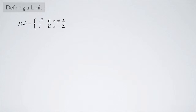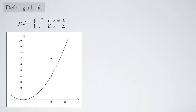Suppose we have a function f that looks like this: x squared if x is not equal to 2, and 7 if x is equal to 2. Here's a graph of that function — it looks like x squared everywhere except at x equals 2, where we have a hole. Normally it would be 4, but instead it's 7, so we have a dot up at 7.